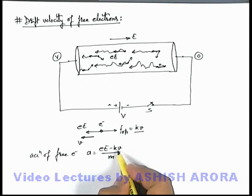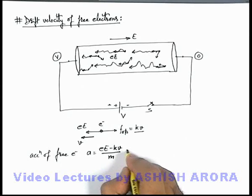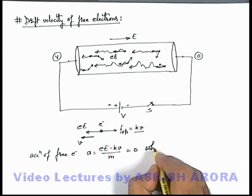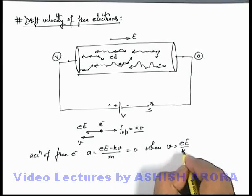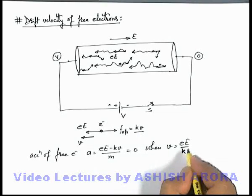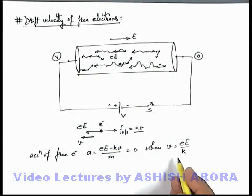So this kv is increasing, that will reduce the acceleration, and at some maximum speed this acceleration becomes zero. We can say this will be equal to zero when the speed becomes eE/k. Here k is just a proportionality constant which depends on lattice parameter of the material in which the electrons are flowing.